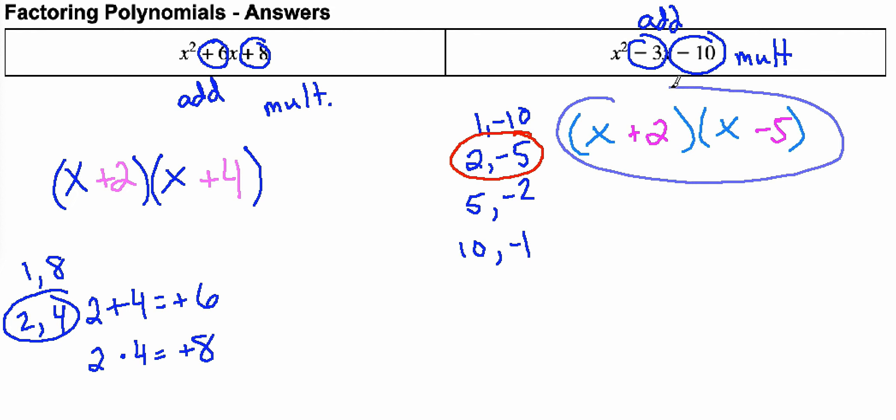So this is my final answer for the factored form: x plus 2 times x minus 5.